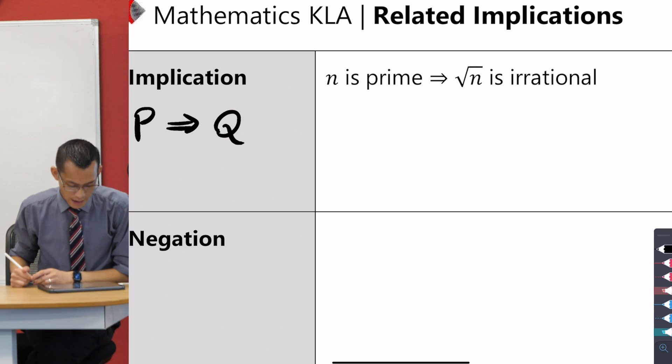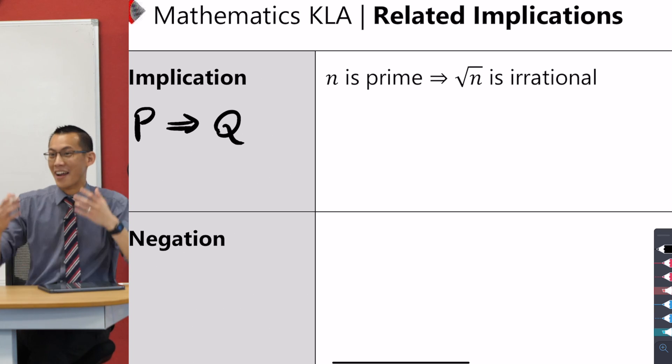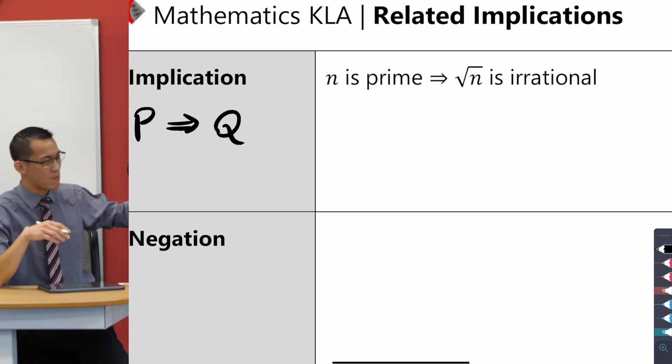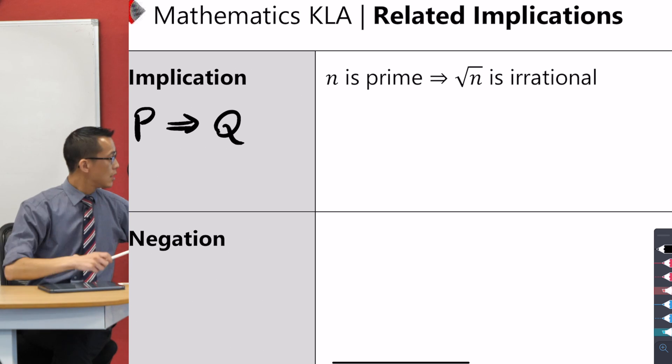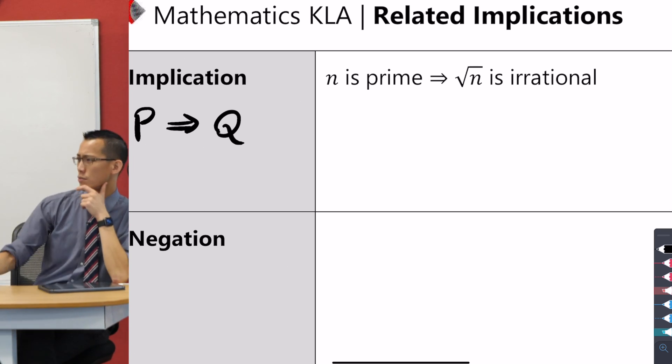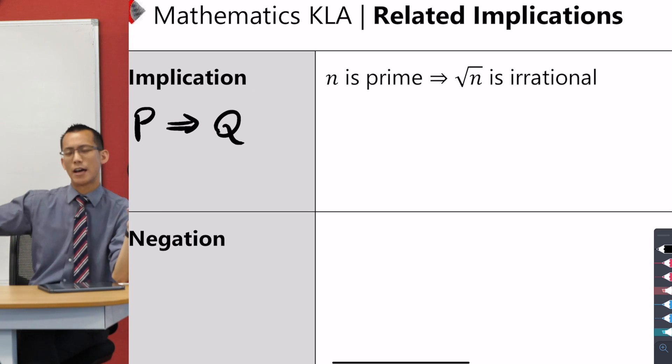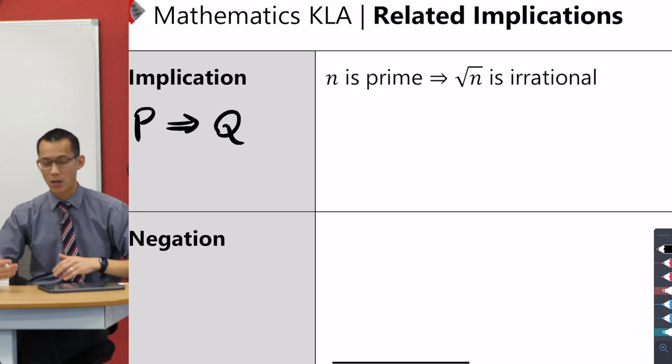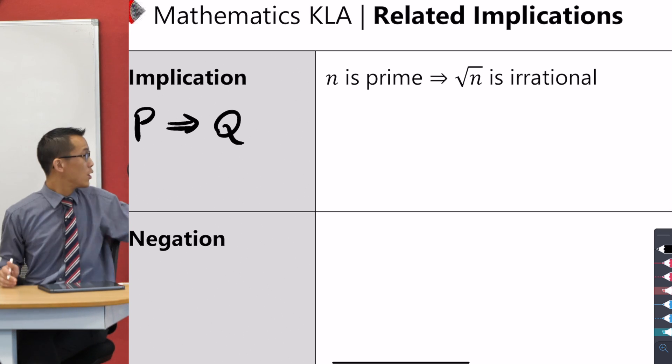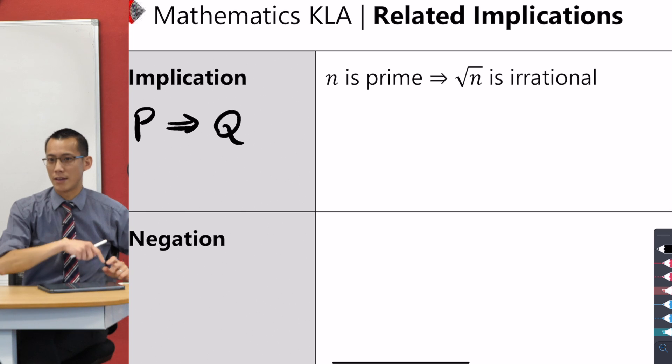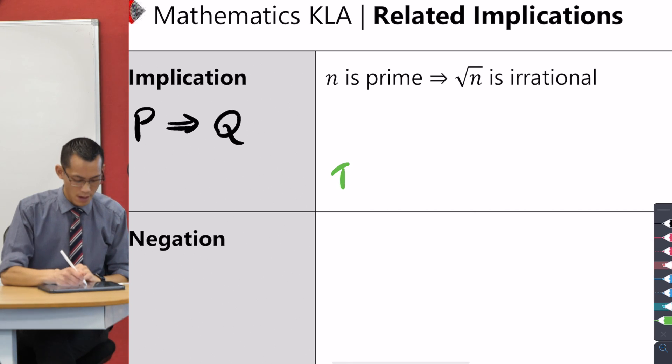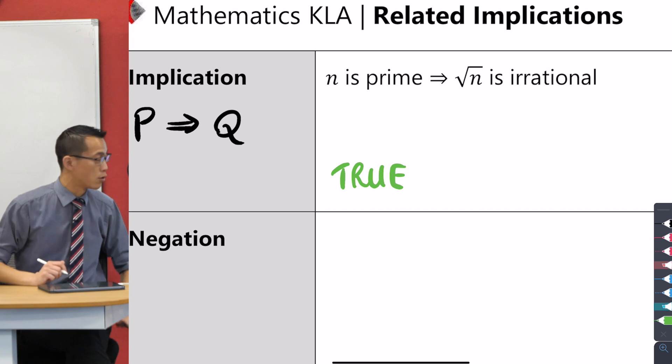If n is prime—and when I say the word prime we're clearly talking about whole numbers here—that implies that the square root of n is irrational. Is that true? Is that a true statement? It is. You can think about all the prime numbers you know: 2, 3, 5, 7, 11, and so on. If you take the square root, obviously it's not a square number because then it wouldn't be prime anymore. So therefore n is prime implies square root of n is irrational. So we've got the P then Q, and we might as well say, since you just told me this is a true statement, we're gonna label all of these cells by the way as to whether they're true or false. That's gonna be important later.